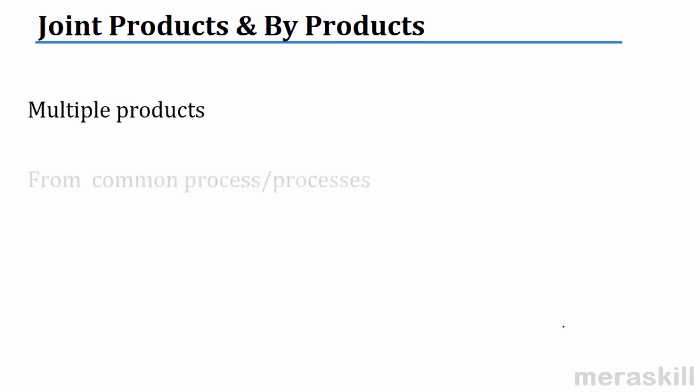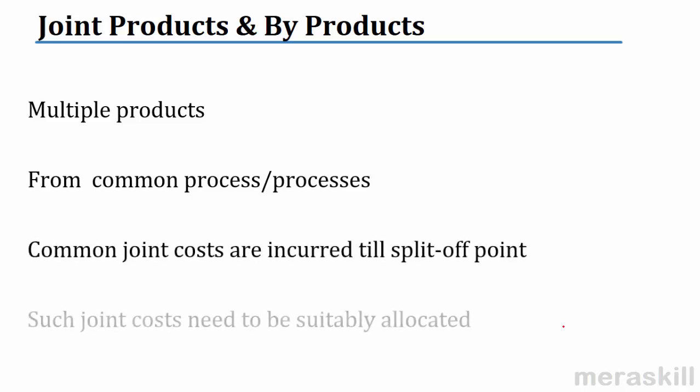So joint products and by-products are multiple products which come from a common process or processes. Common joint costs are incurred till the split-off point and these have to be suitably allocated. Clear students, that is all you have to know.